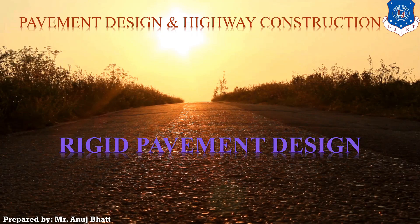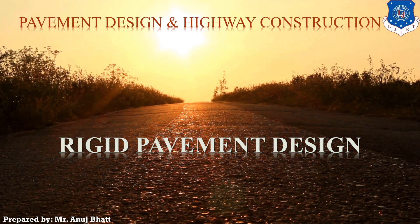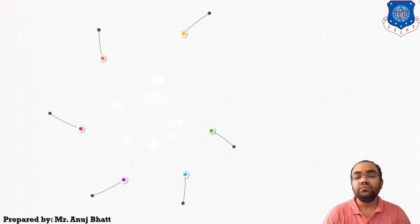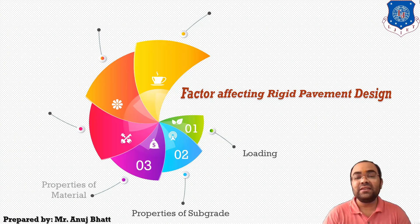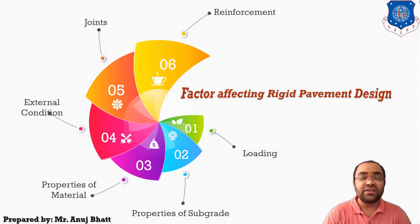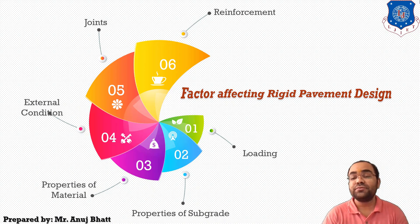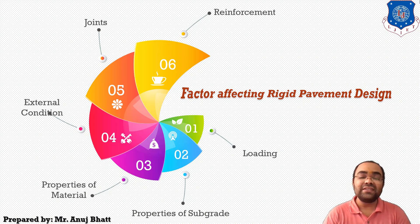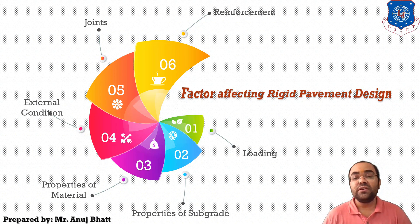Let's start the lecture with the first topic: what are the different factors that affect the rigid pavement design? For the rigid pavement design, we have a few factors — loading, properties of subgrade, properties of material, external conditions, different joints provided in the rigid pavement, and the reinforcement added in the pavement structure. These are the main leading factors that affect the design of rigid pavements.